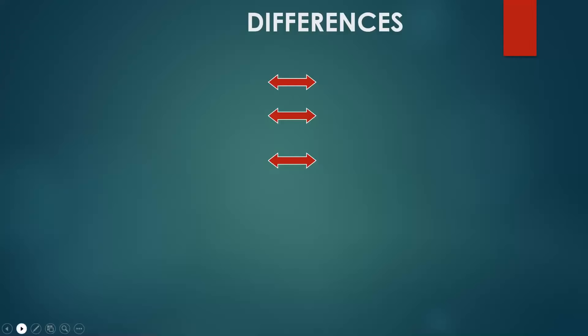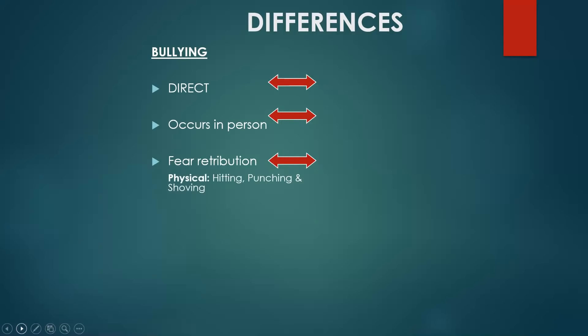Just to note some differences: bullying is direct and occurs in person. There's often a fear of retribution associated with it. It can be physical — hitting, punching, shoving — or verbal — teasing, name-calling, gossip — or non-verbal through use of gestures and exclusion. Exclusionary practices are also a form of bullying.